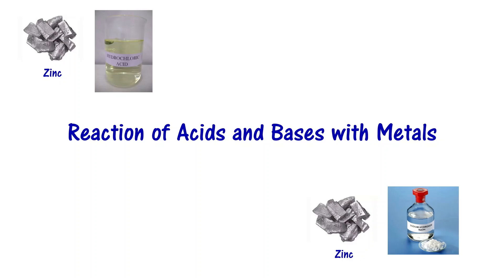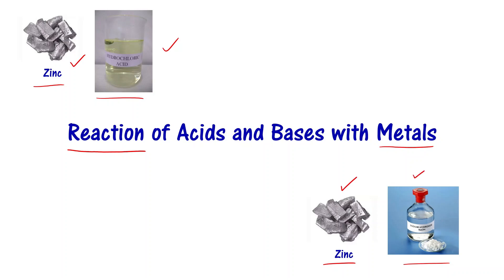In this video, we are going to discuss the reaction of acids and bases with metals. For example, we have zinc metal and hydrochloric acid — if these two react, what happens? Similarly, I have zinc and sodium hydroxide, which is a base. What happens when zinc reacts with sodium hydroxide? We are going to discuss this.